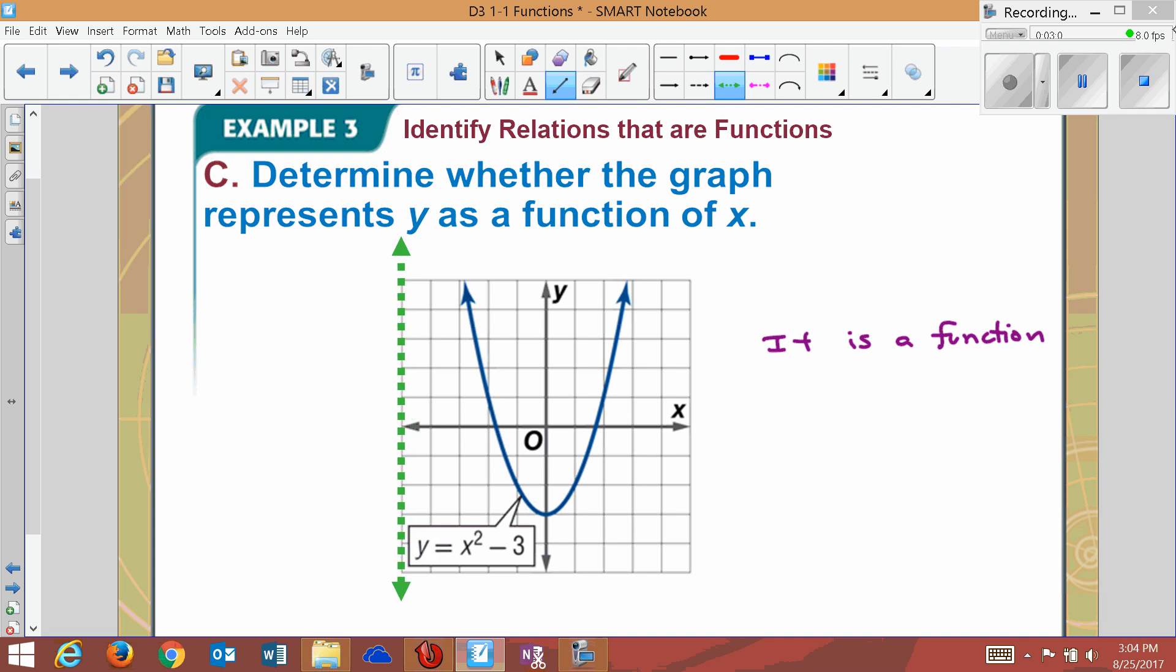If I pass the vertical line through this, it would never hit this parabola more than one place at a time. Notice I'm only hitting the blue curve at one spot at any one time. So it is a function.